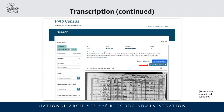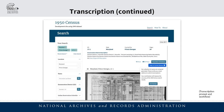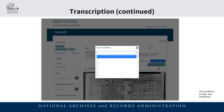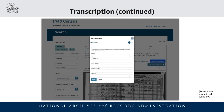Here we have the search results page again, and in this example we can see the transcription button labeled 'help us correct names,' which will appear whenever you are viewing a digitized population schedule on the site. Clicking on the button will prompt you to follow a simple set of steps to get started, including entering a valid email address for verification purposes. However, it is not necessary to create an account to submit transcriptions. Here we can see one of the first screens you'll see within the transcription tool after verifying your email address. This is where you would select the line number that is associated with the name that you would like to transcribe. After you've selected the line number, you'll be directed to the next screen where you can transcribe the full name.